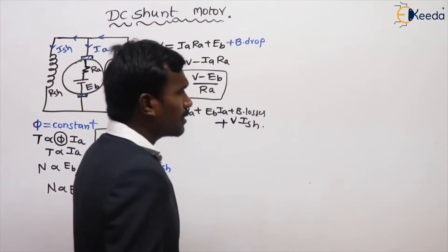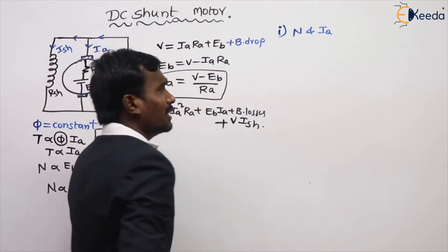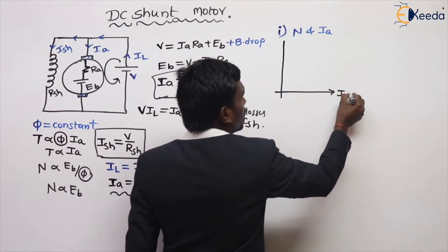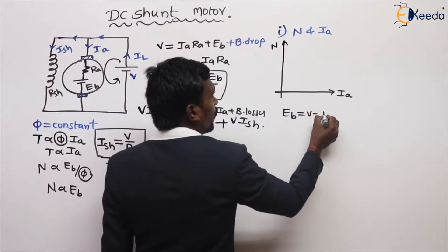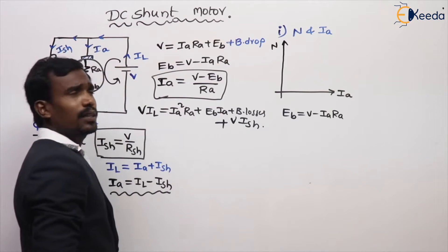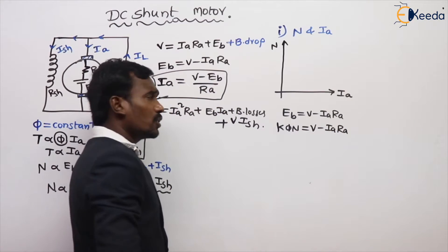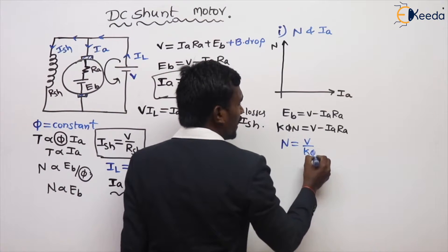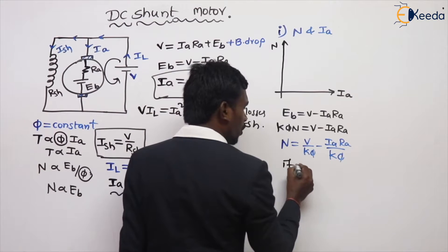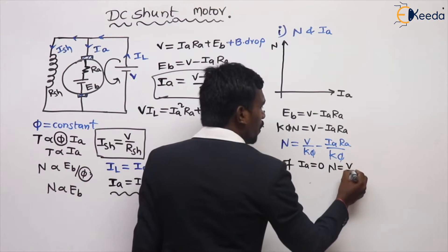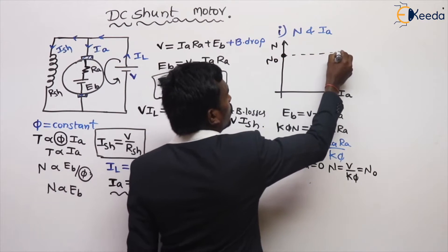The first graph is speed versus armature current. We know EB equals V minus IA·RA, so N equals V/Kφ minus IA·RA/Kφ. When IA equals zero, N equals V/Kφ, which is called the no-load speed N₀.